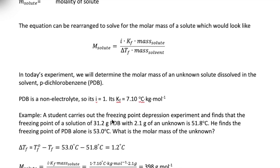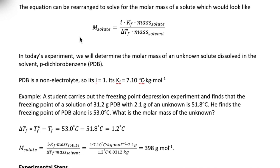One of the most common uses of colligative properties is to determine the molar mass of the solute that is dissolved in a particular solvent. For the freezing point property, we can rearrange the equation to solve for molar mass of solute as shown here. For today's experiment, we will use this equation to help us determine the molar mass of an unknown solute.